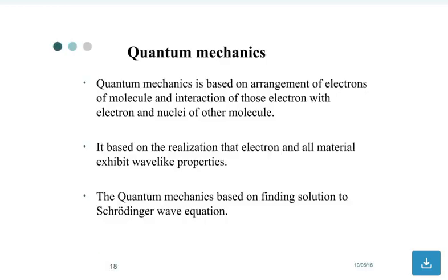Quantum mechanics is based on the arrangement of electrons in molecules and interaction of the electrons and nuclei with other molecules. It's based on the realization that electrons and all materials exhibit wave-like properties. Quantum mechanics is based on finding solutions to the Schrödinger equation.